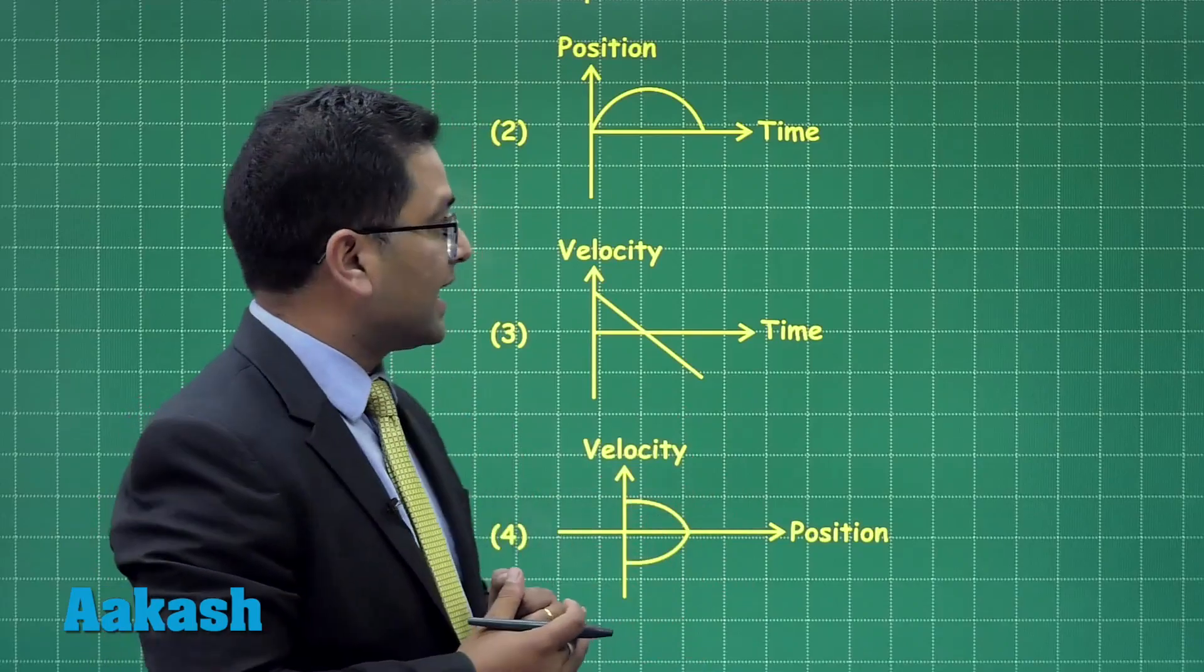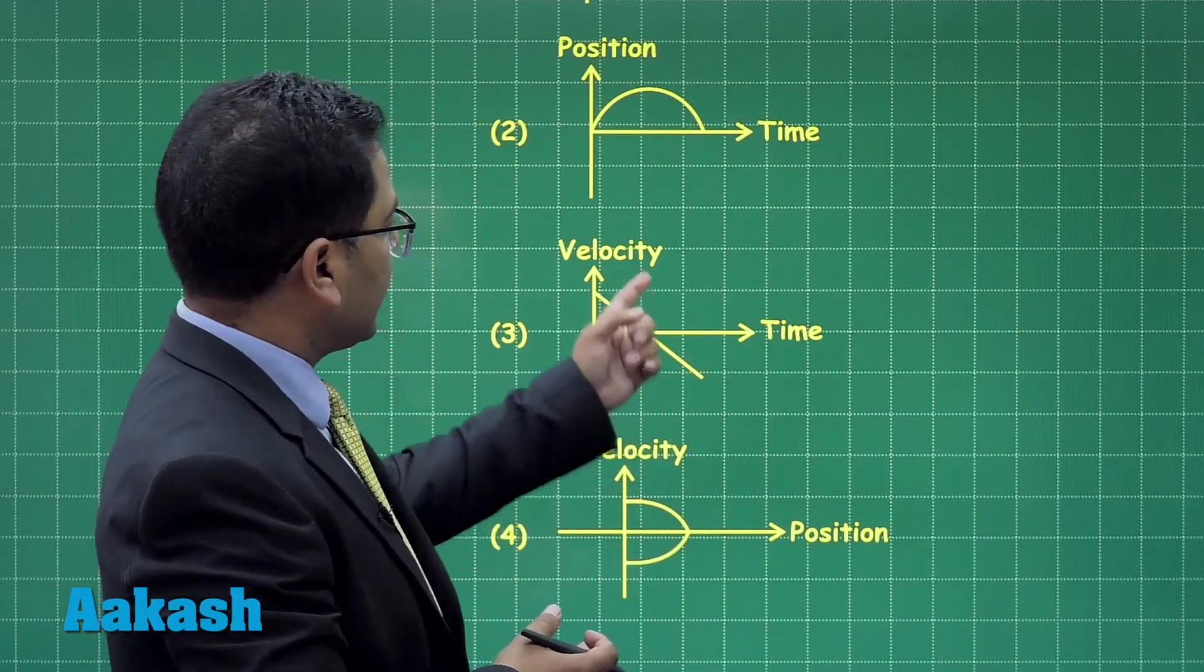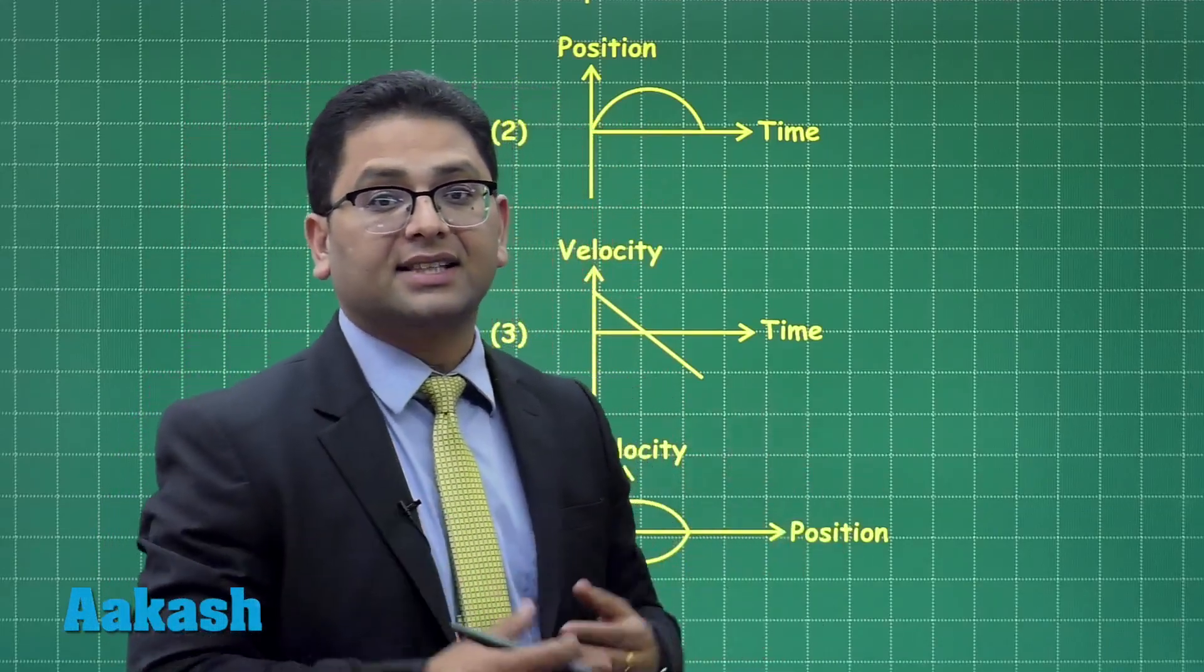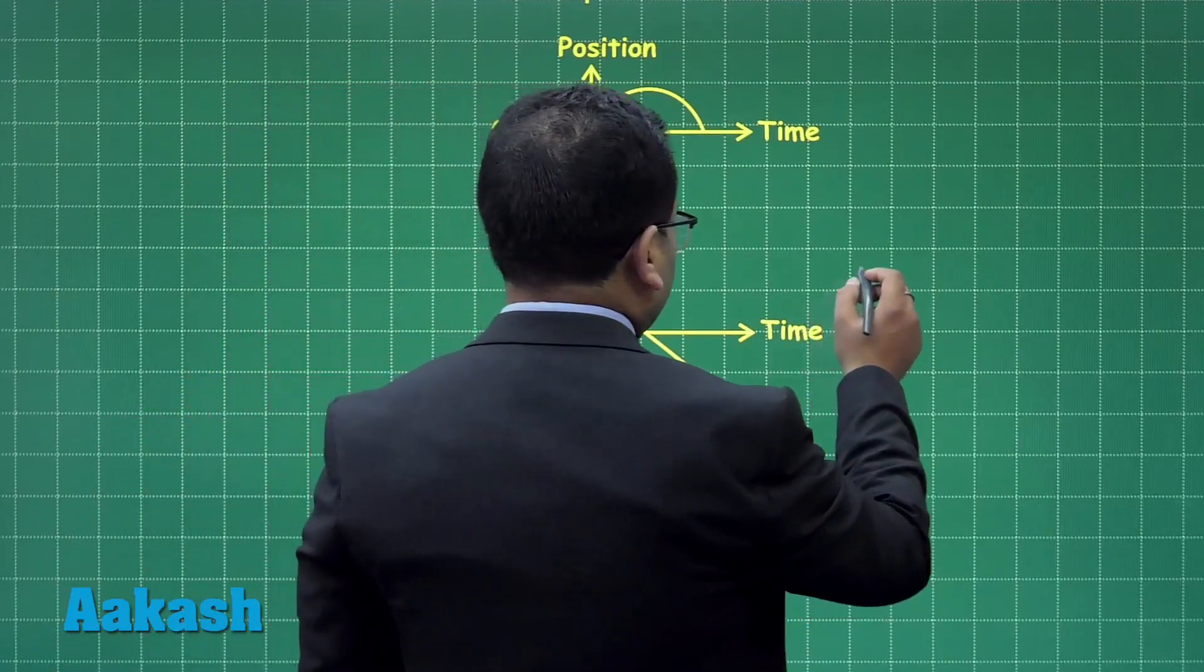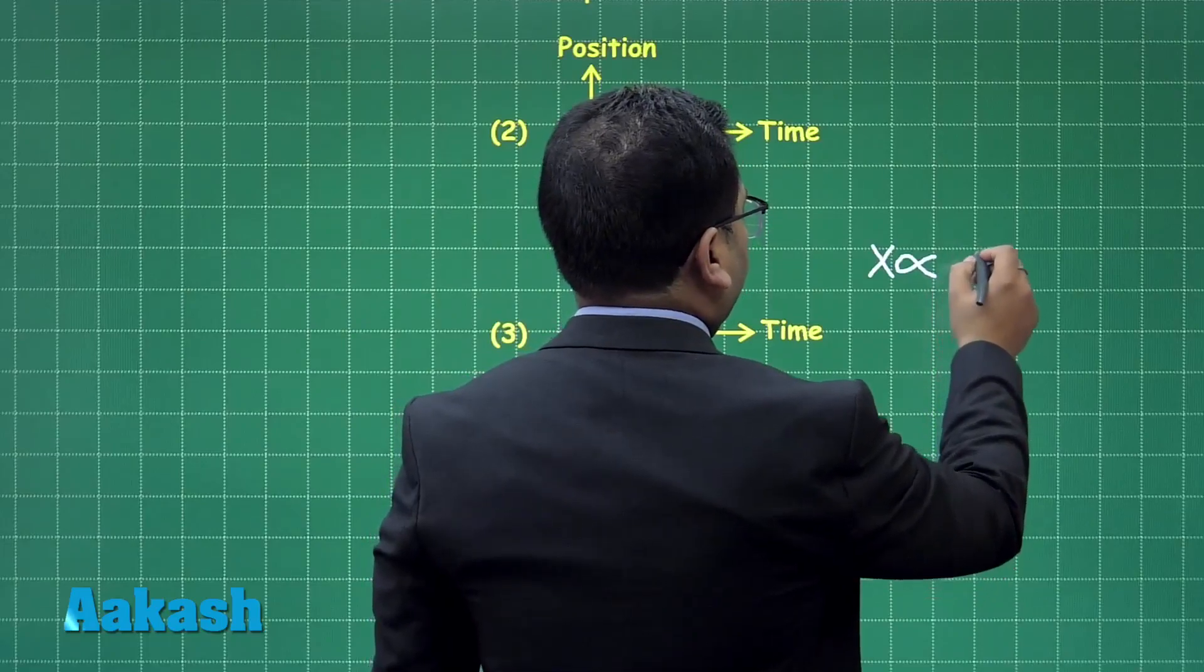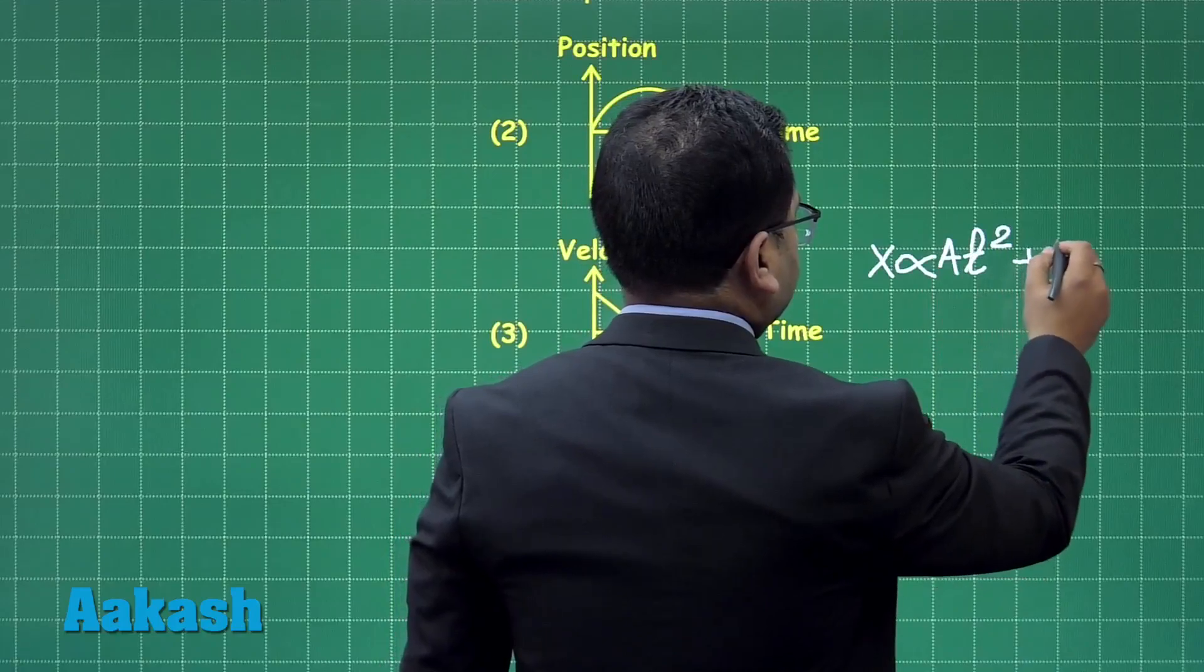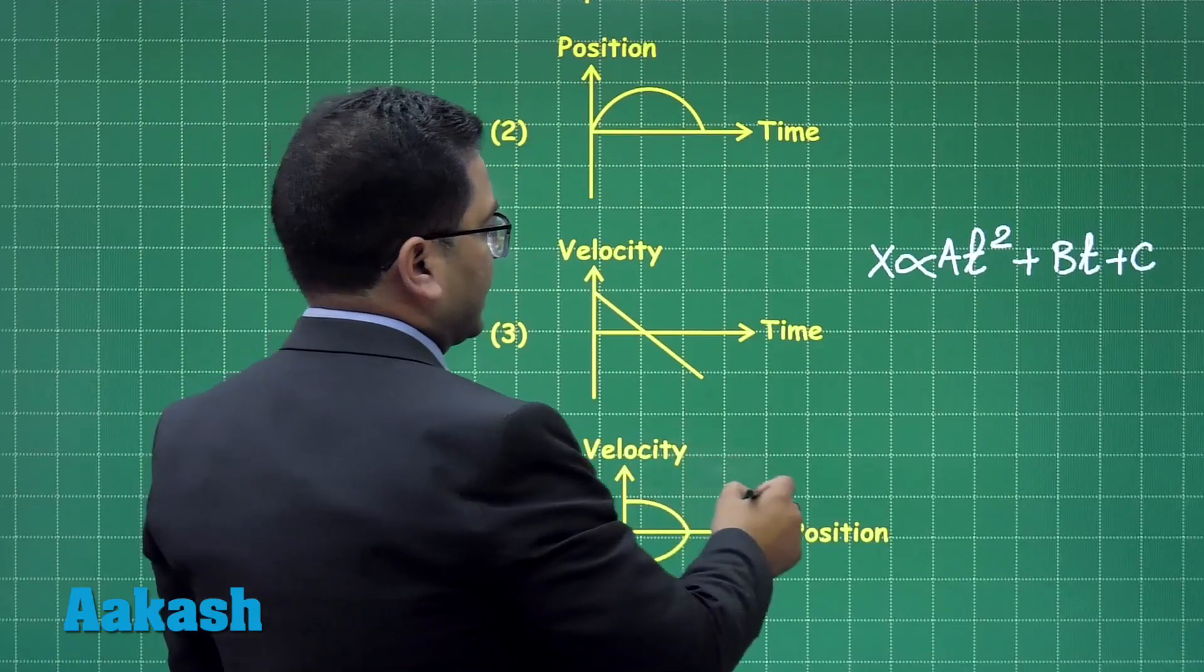One thing what you can see is that just by virtue of experience, this and this represents a same sort of motion where the acceleration is constant. Now you could see when acceleration is constant, then x is directly proportional to t squared with a constant a and plus of b and plus of c, a parabolic variation.